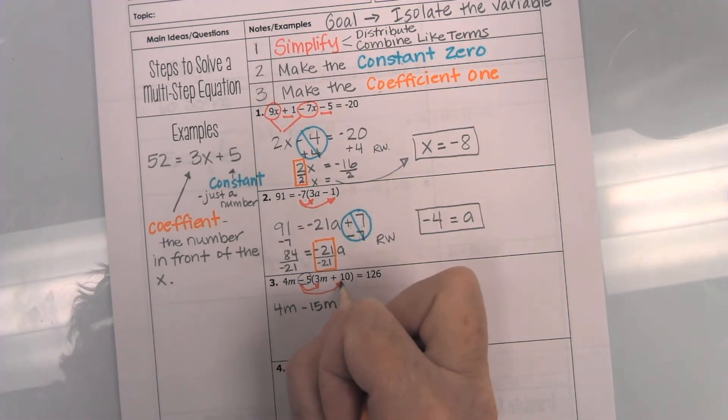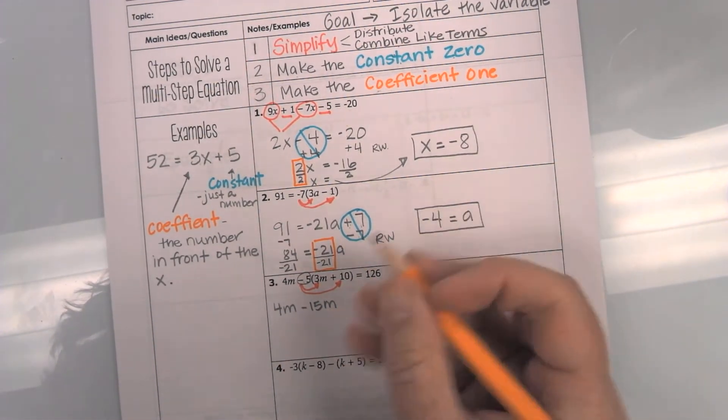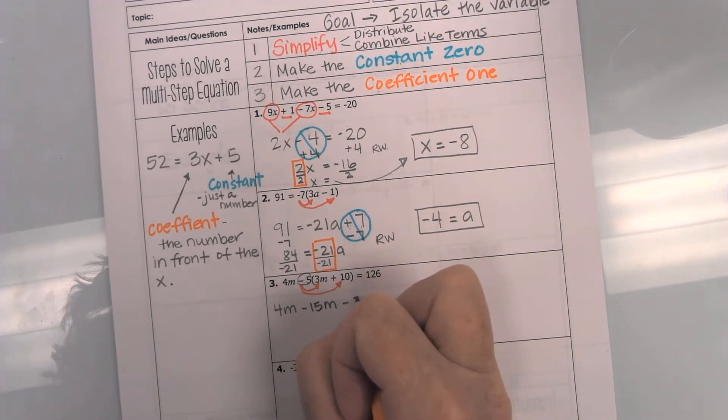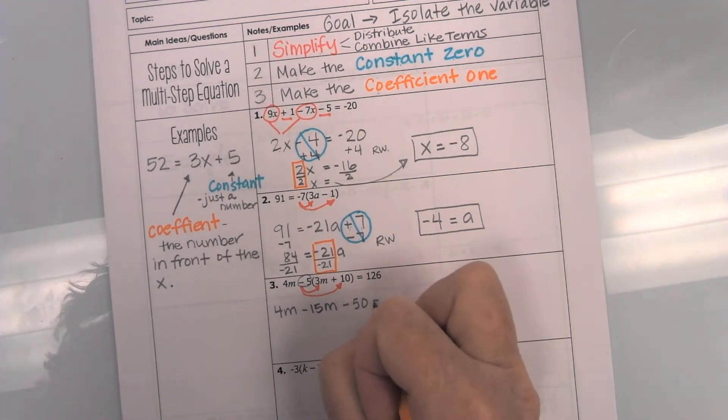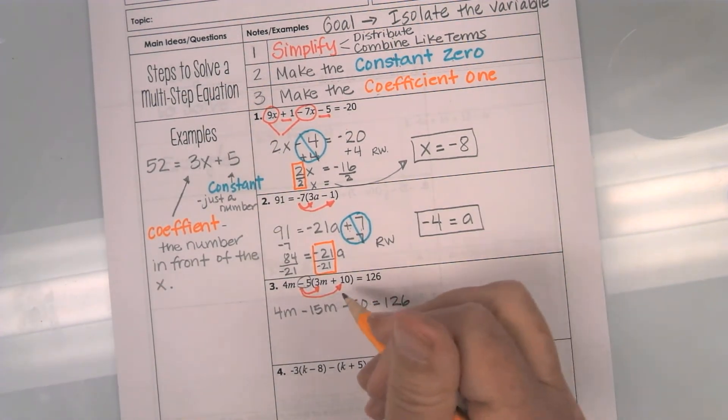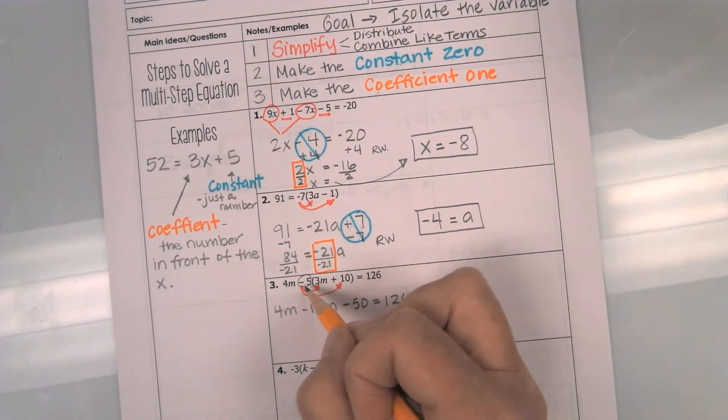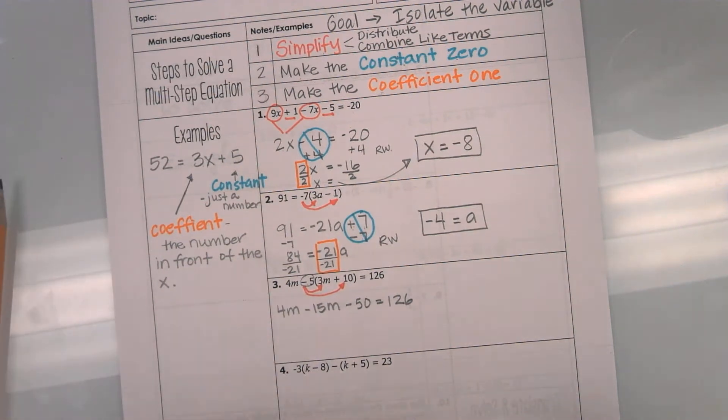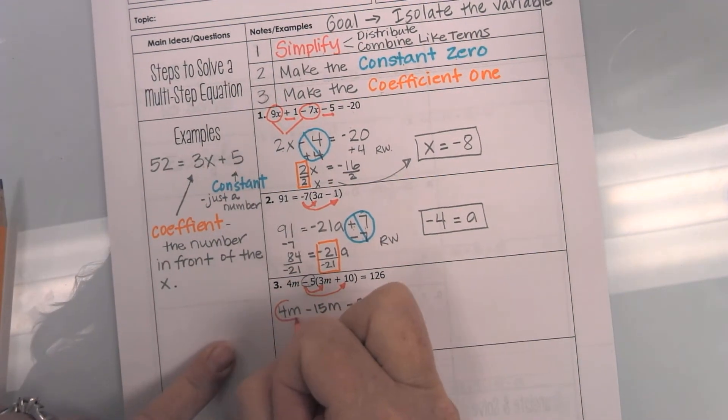Okay, then I have negative 5 times a positive 10. So, that gives me a negative 50 equals 126. Okay, now that I have simplified my distributive property, now I have to combine my like terms. Notice that I have two values with the m,